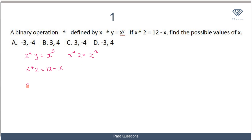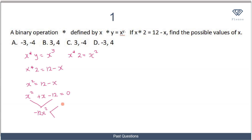We have x² = 12 minus x. Collecting like terms and bringing everything to one side, we have a quadratic equation: x² + x - 12 = 0. We do our factorization: we need two numbers that multiply to give -12x² and add to give +x. That would be 4x and -3x, since 4x times -3x gives -12x² and 4x - 3x gives x.